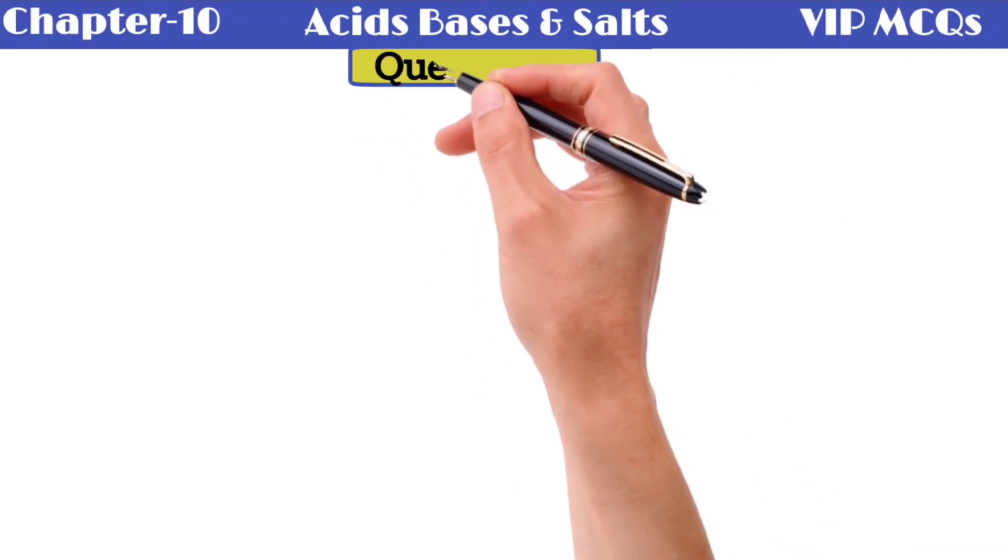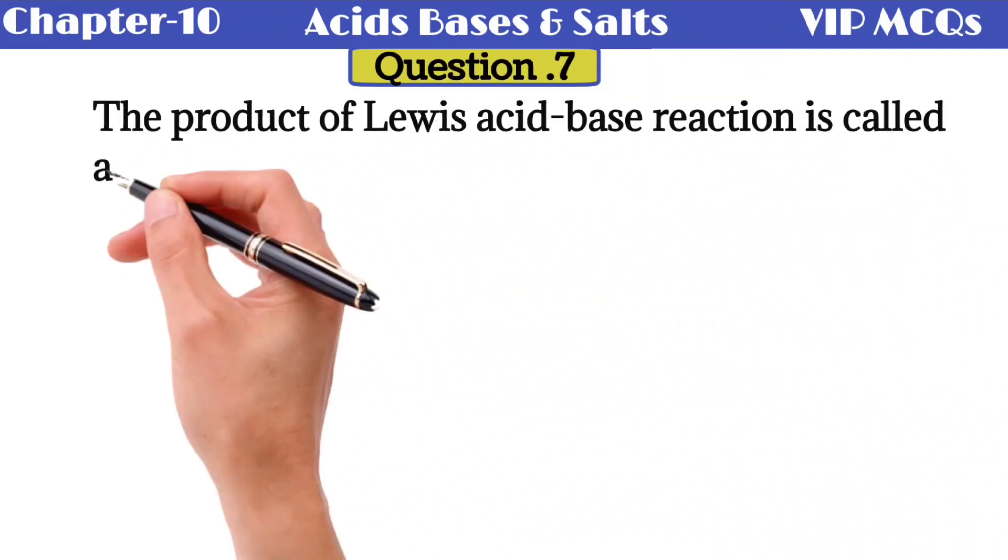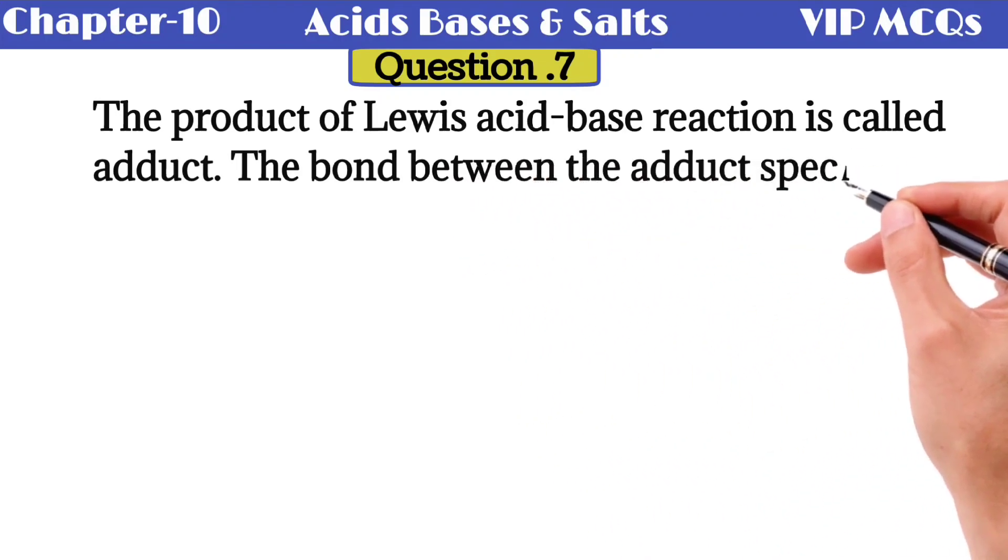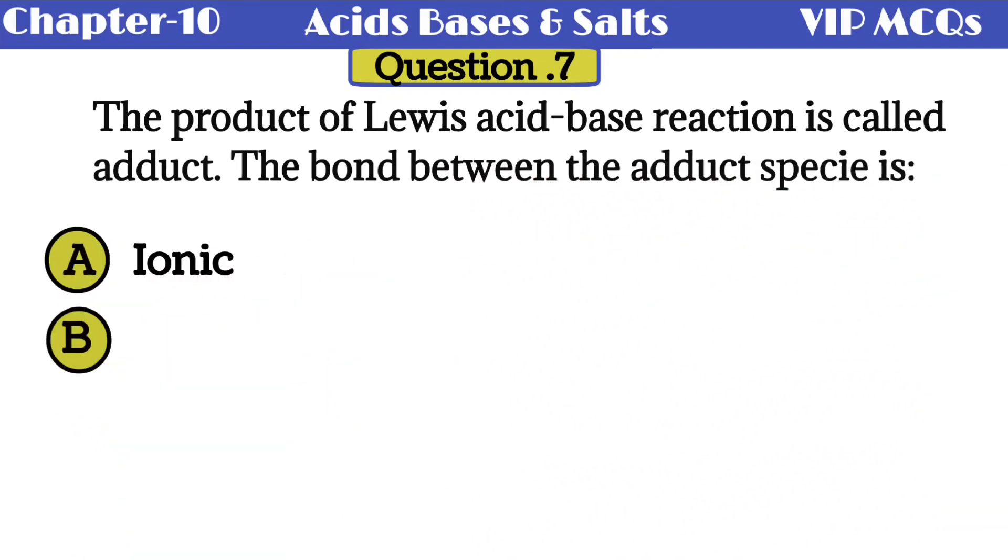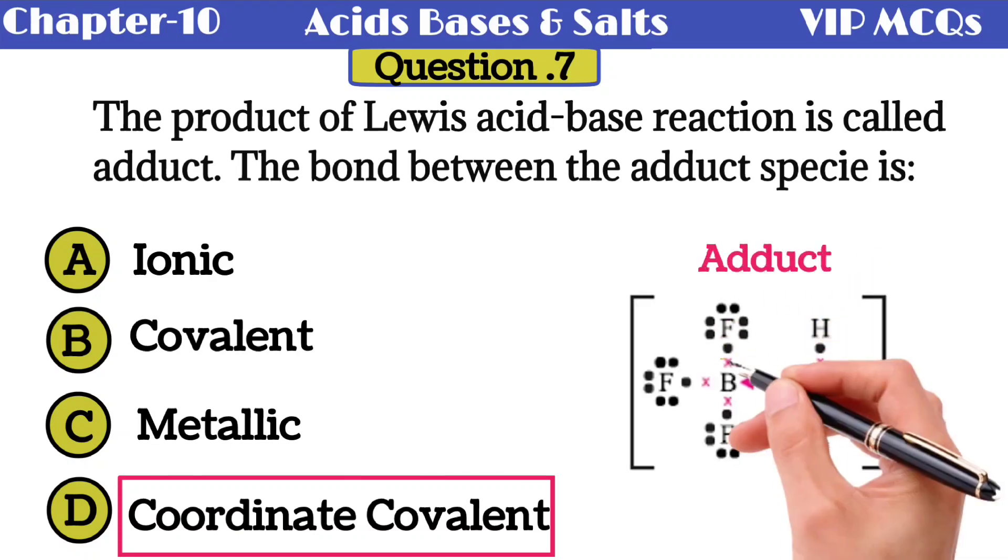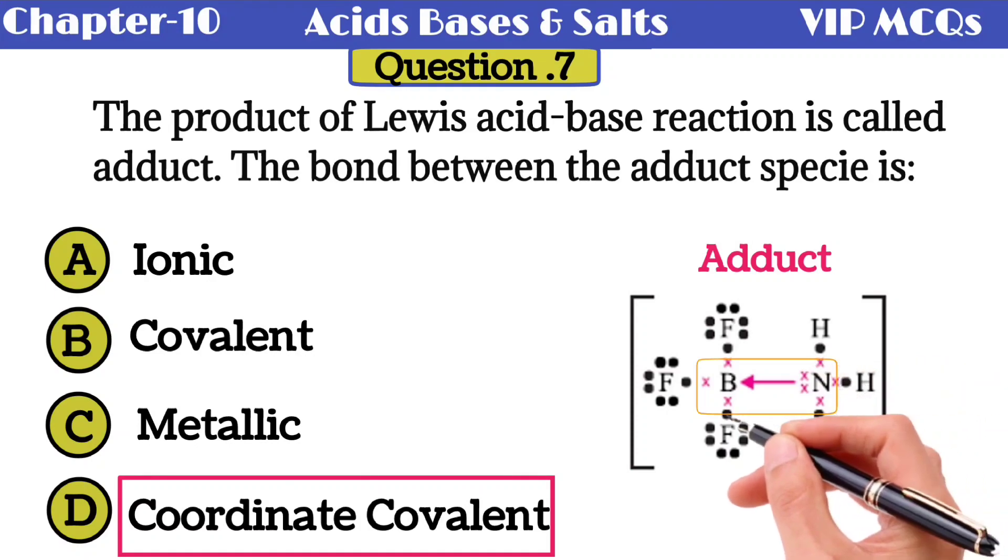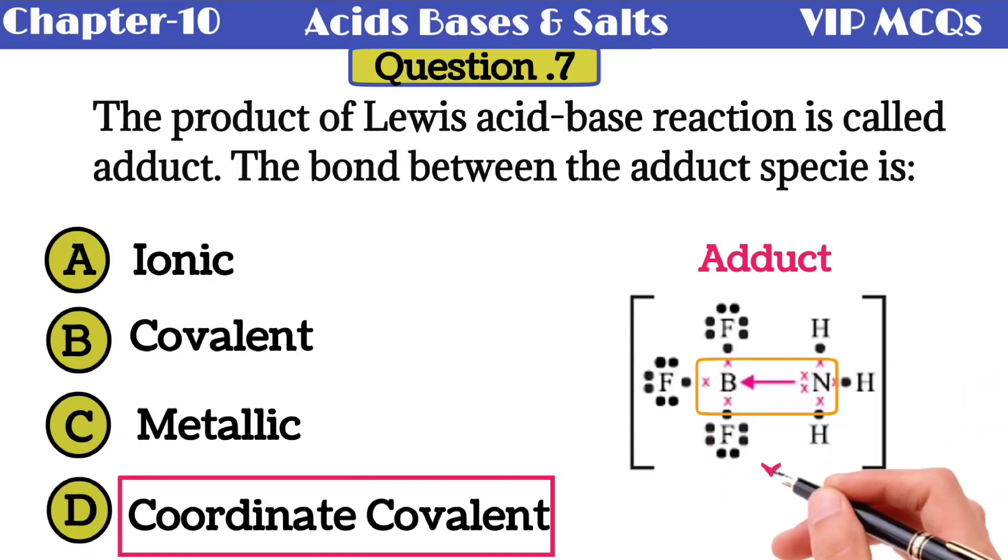Question 7: the product of Lewis acid base reaction is called adduct. The bond between the adduct species is - option A ionic, option B covalent, option C metallic, option D coordinate covalent bond. The correct option is coordinate covalent bond. Here is an example to understand this question. This is an adduct in which ammonia donates a pair of electrons and boron trifluoride accepts a pair of electrons, and the bond formed is a coordinate covalent bond.